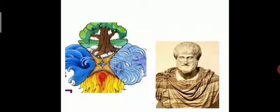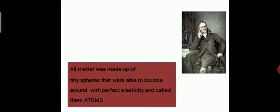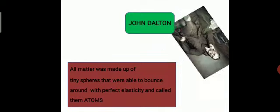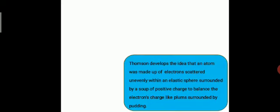After Democritus came Aristotle, who also said something is present inside matter which is called an atom, but he was not sure what is present inside the atom. Later came John Dalton, whose idea was that all matter was made up of tiny spheres that were able to bounce around with perfect elasticity — they are elastic in nature, they can go forward and come back.